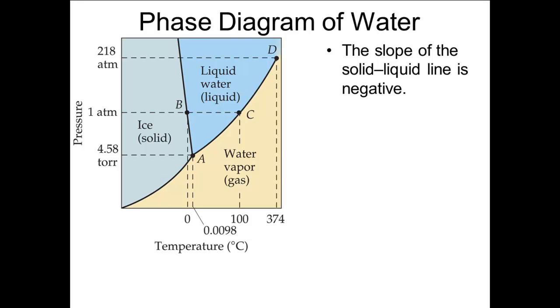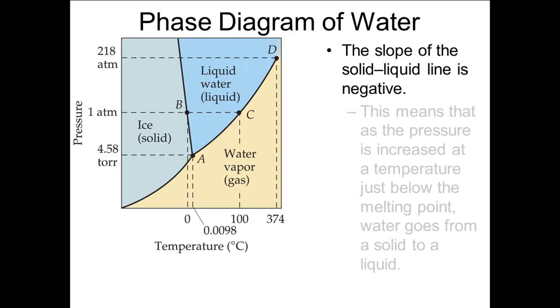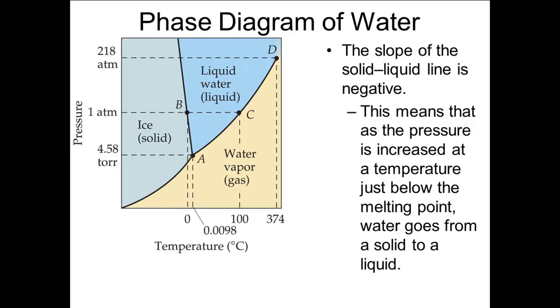Note that the melting point line tilts to the left, that is, the slope is negative. This occurs when the density of the solid is less than the density of the liquid. If the solid is denser, as it usually is, the line will tilt to the right. That is, it will have a positive slope.